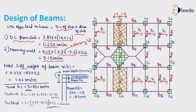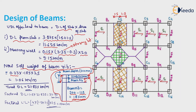Now we will calculate self-weight of beam rib. Beam rib is the part of beam below the slab. Overall depth of beam is 300 mm and slab thickness is 115 mm. Beam rib equals total depth of beam minus slab depth: 300 − 115 = 185 mm. Self-weight of beam rib equals 0.23 × (0.3 − 0.115) × 25 = 1.06 kN per meter. Total dead load equals 21.835 kN per meter.